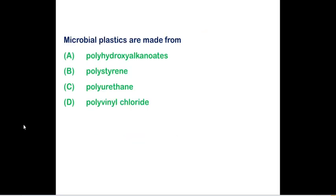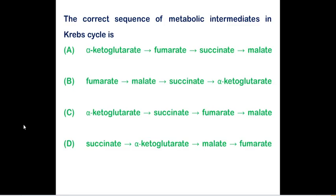Microbial plastics are made from polyhydroxyalkanoate (PHA) and polyhydroxybutyrate. They are called microbial plastics because they originate from microbial sources. They are natural biodegradable polymers produced by microorganisms, generally stored in the cytoplasm as water-insoluble inclusion bodies.